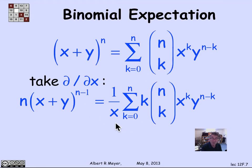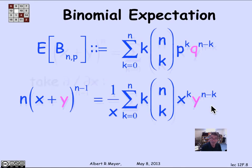we get the following formula for this sum that is starting to look just like the expectation of B_{n,p}: 1 over x times the sum from k equals 0 to n of k times (n choose k) x^k y^(n-k). Well, let's compare the two terms.